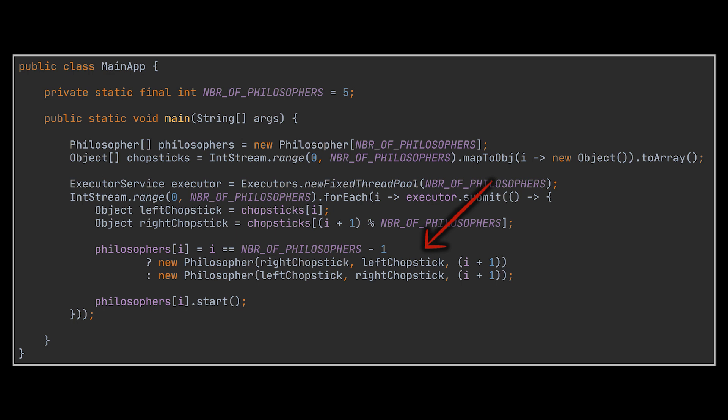The simplest one being that all philosophers will keep reaching for the left chopstick first except one, who will first reach for his right chopstick. So we introduce a condition that makes the last philosopher reach for his right chopstick first instead of the left. This breaks the circular wait condition and averts the deadlock. If you run the code one more time, you will see that it doesn't hang but keeps running indefinitely.